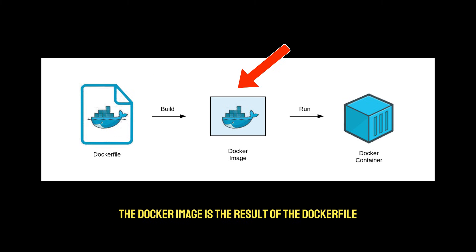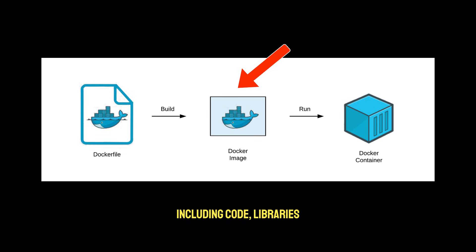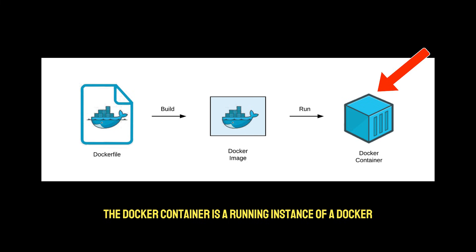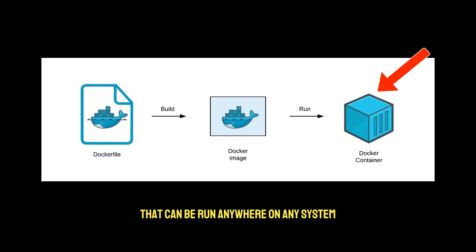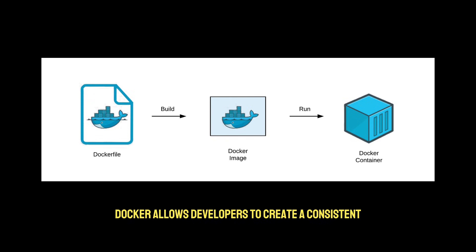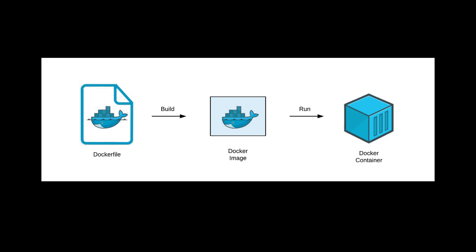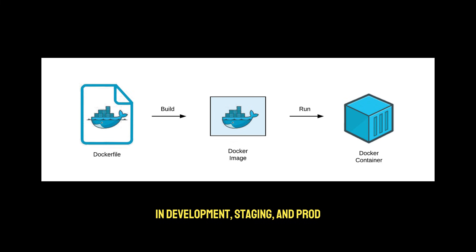The Docker image is the result of the Dockerfile — it contains everything needed to run your app, including code, libraries, system tools, etc. The Docker container is a running instance of a Docker image: an isolated process that can be run anywhere on any system that supports Docker. Docker allows developers to create a consistent environment, ensuring code runs the same way in development, staging, and production.